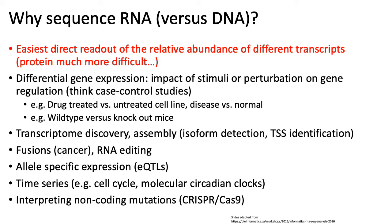The first obvious question you should ask yourself is: why bother sequencing RNA? The answer is that it's perhaps the easiest direct readout of the relative abundance of different transcripts in your genome. There are proteomics-based measures for measuring the abundance of actual proteins, but those are much harder to generate comparable measurements across multiple samples or studies. RNA sequencing is a direct readout of relative transcript abundance.